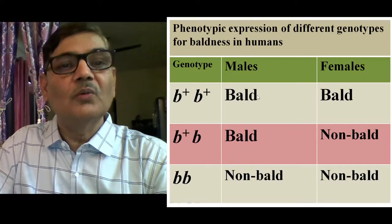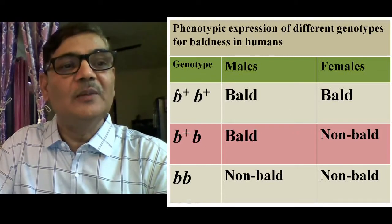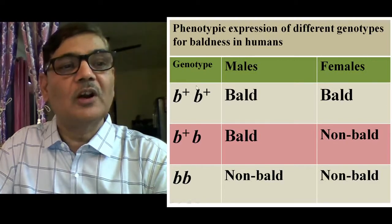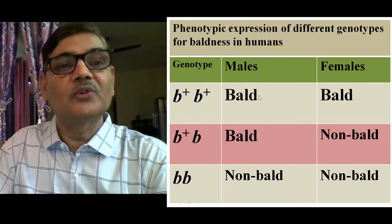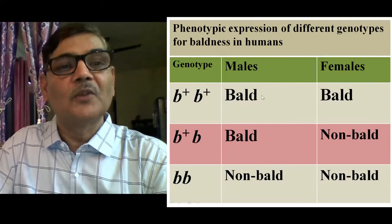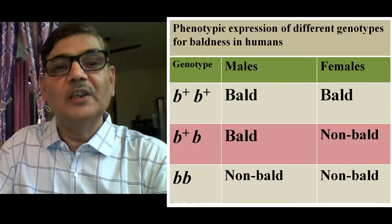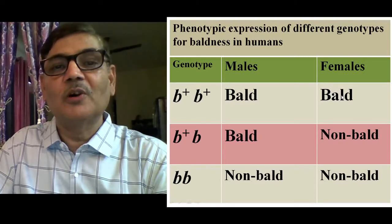In this table, what is being shown is that there is an allele B-plus that causes baldness, situated on a specific autosome in humans. Individuals with the B-plus, B-plus genotype are bald if they are male — meaning they will have loss of hair in a specific pattern, with the frontal portion of the head lacking hair. Females with the same B-plus, B-plus genotype are also bald, but the intensity of baldness is much less; females have sparsely distributed hairs rather than complete baldness.